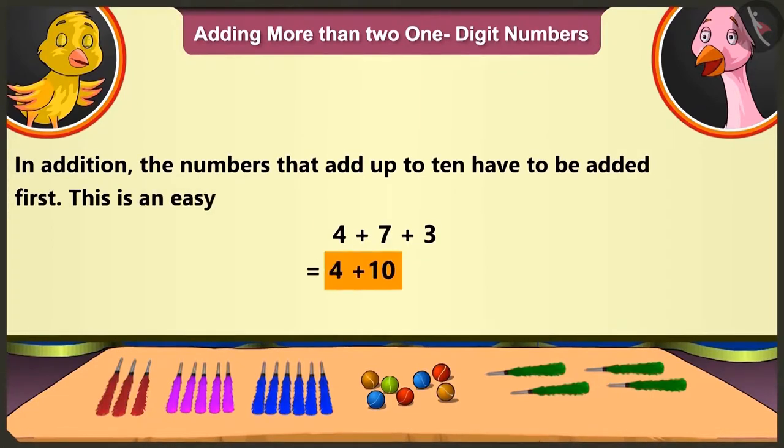This means that those numbers which add up to ten have to be added first. You got it right, Pillu. As per the concept of addition, the numbers that add up to ten have to be added first. This is an easy method to add more than two one-digit numbers.